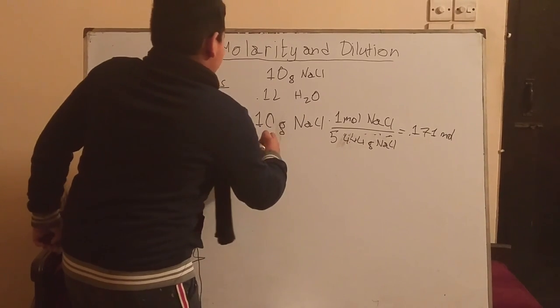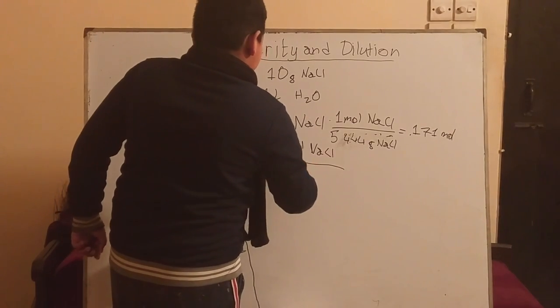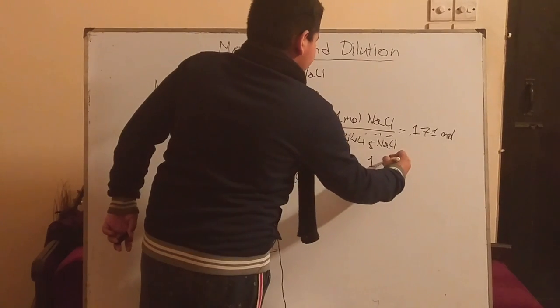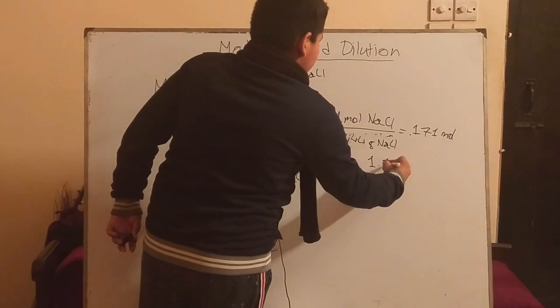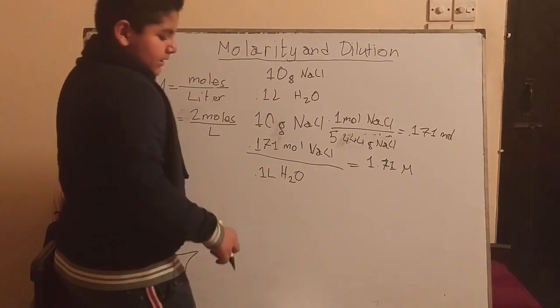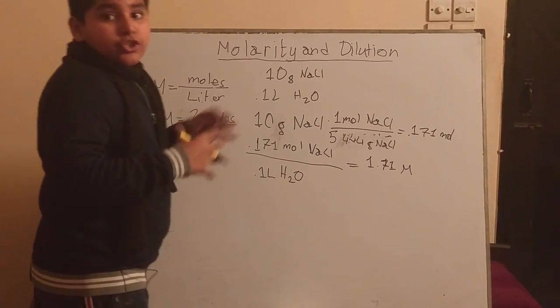Now we take this value with 0.1 liters of water and we get 1.71 molarity of sodium chloride in the solution, and this will be the concentration.